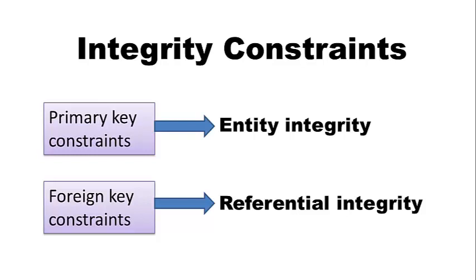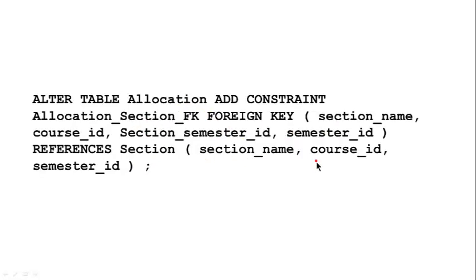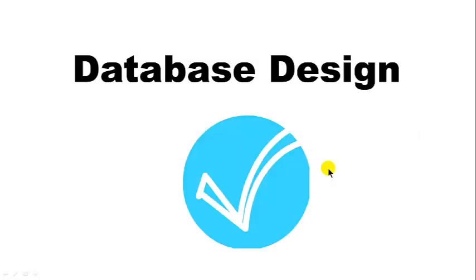Primary key constraints and foreign key constraints both enforce database integrity. Here are the various other referential integrity constraints shown: in the allocation table, the instructor ID must be a valid value from the instructor table; the combination of section name, course ID, and semester ID in allocation must be a valid combination from the section table, and so on.